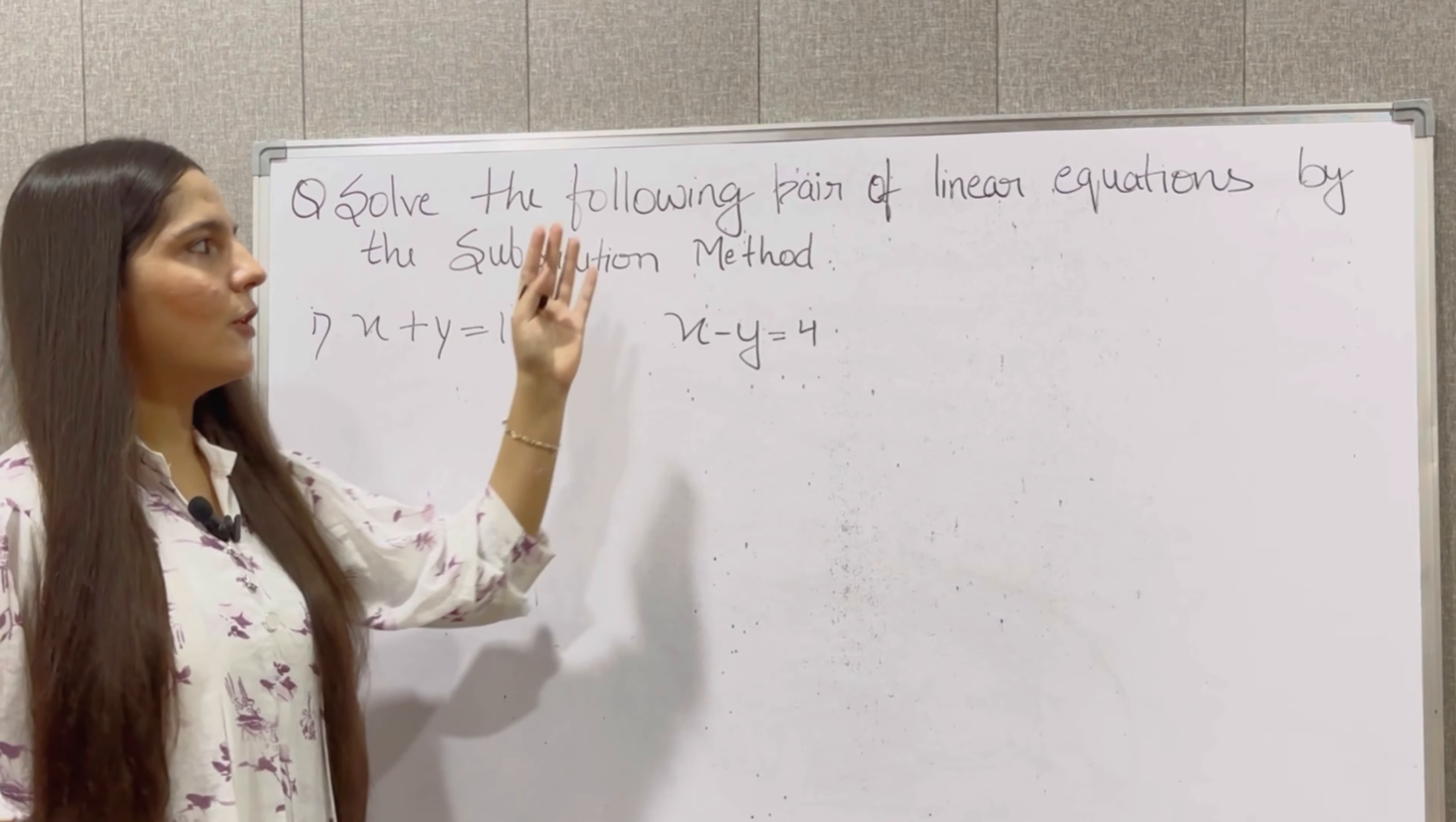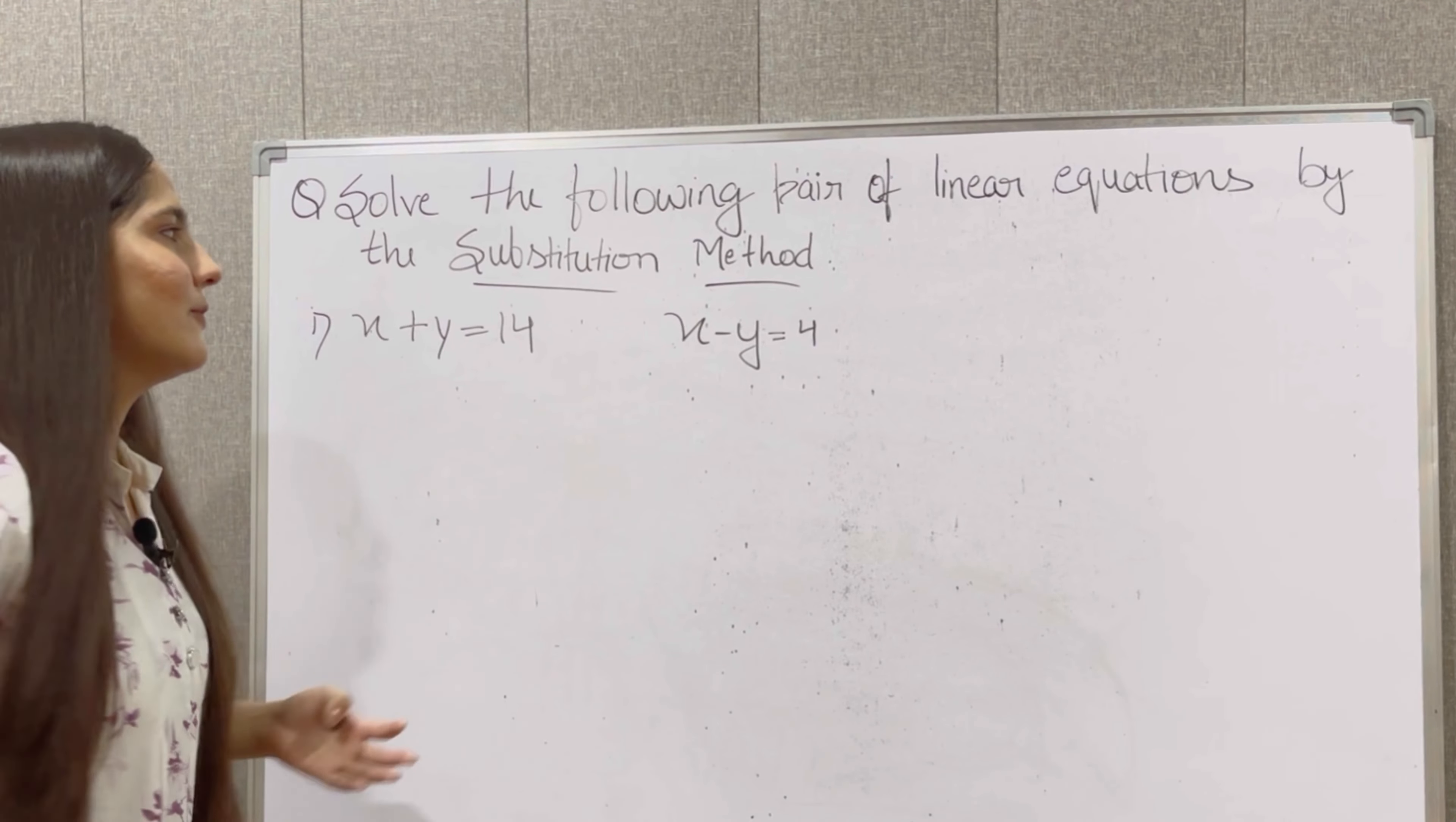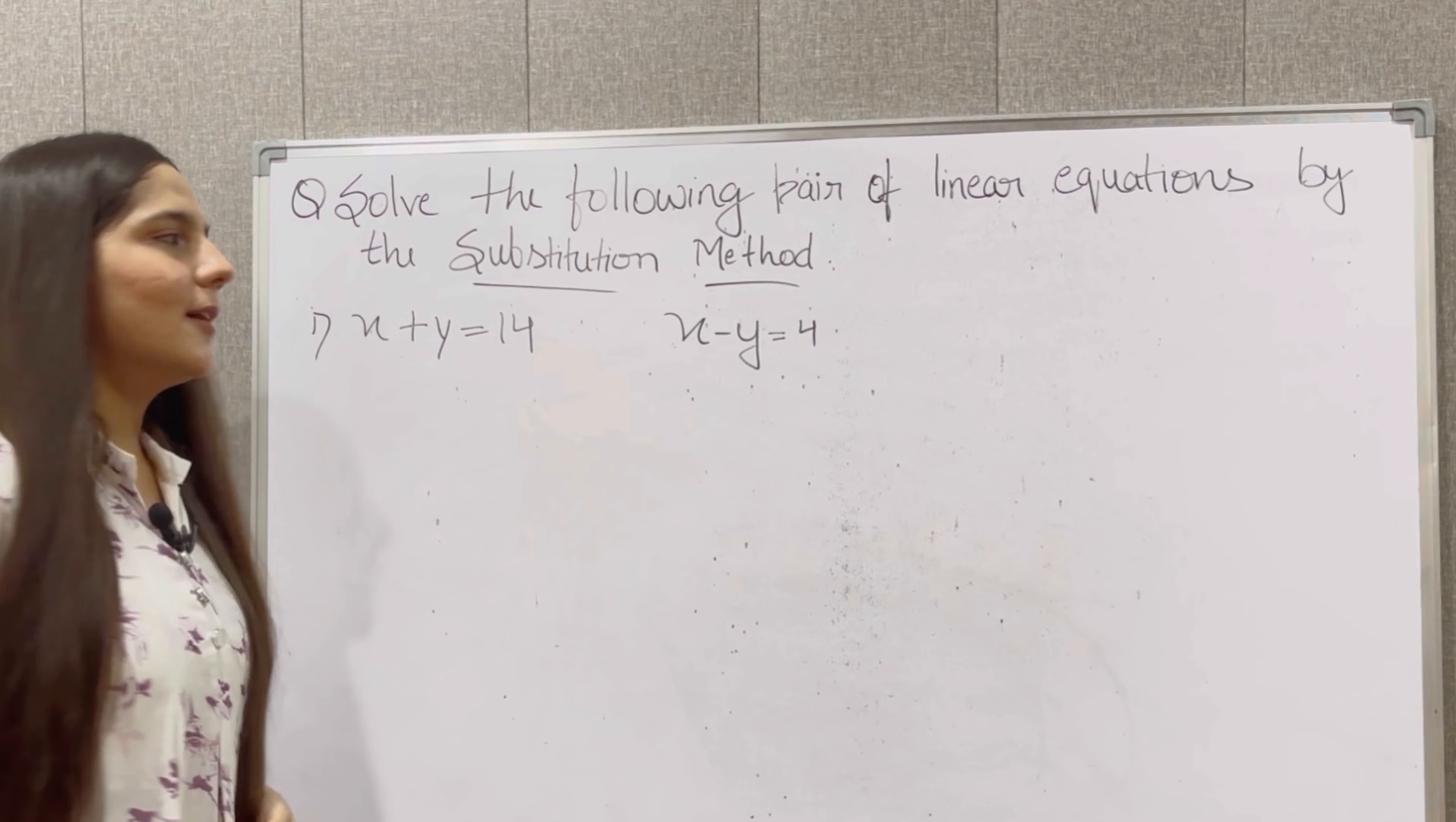Question number 1 is solve the following pair of linear equations by substitution method. So how many equations are given, and substitution method can be used to solve them. We need to take out the value of one variable from one equation and put it in the other.